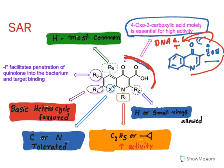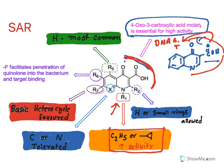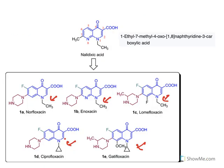Now for the other SAR points: at position 1 (R1), substitution of ethyl or cyclopropyl increases activity — you can see in marketed drugs, ethyl and cyclopropyl are present. At R2, mostly hydrogen is tolerated — only small rings are also allowed, but no significant substitution is seen. At R5, only hydrogen is tolerated.